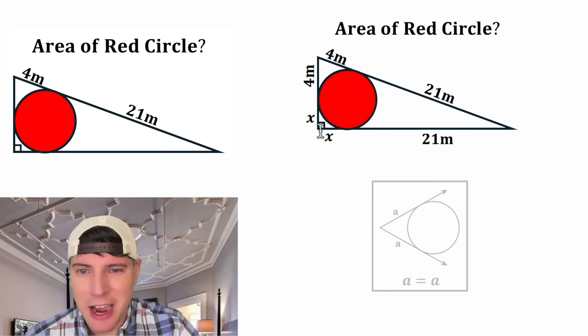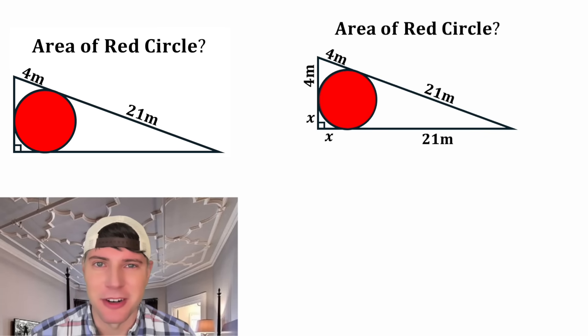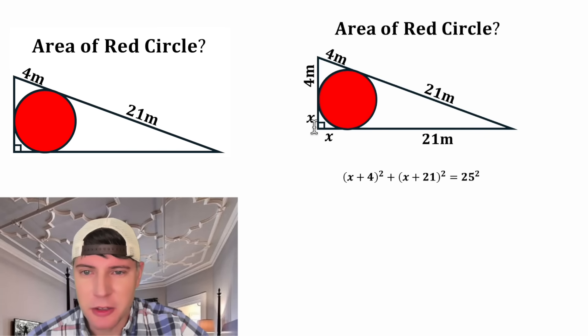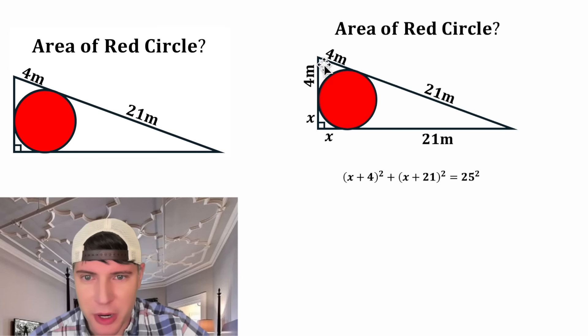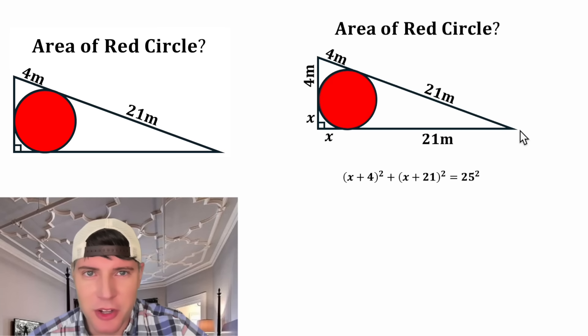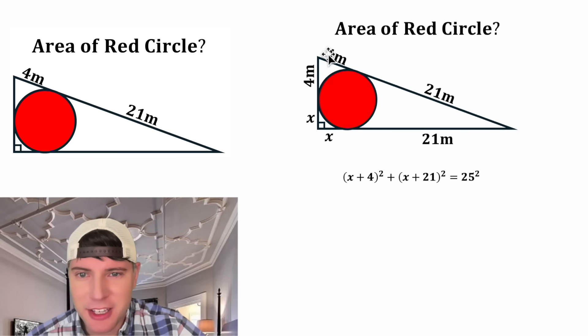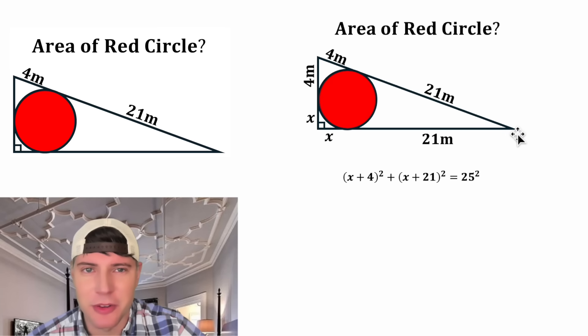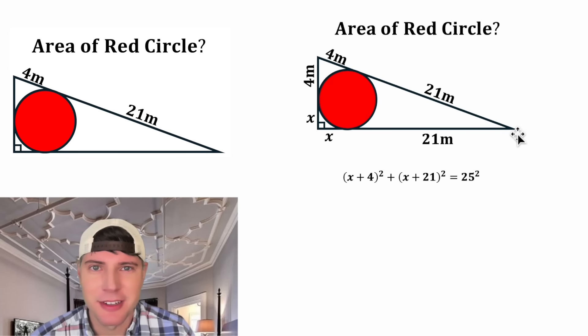Now we have enough information to use the Pythagorean theorem. It'll be (x + 4)² + (x + 21)² equals 25².